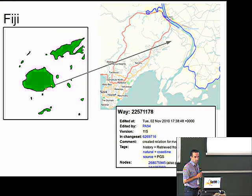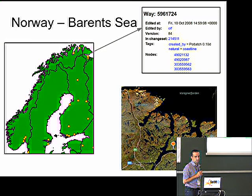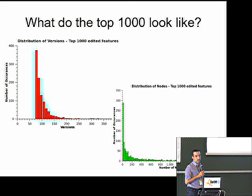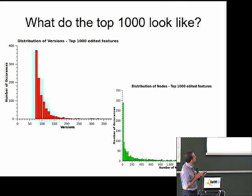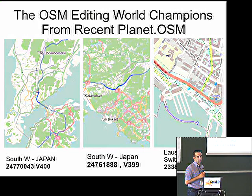In Fiji, a quite heavily edited feature turns out to be neither a polygon nor a line — it's not quite sure what it is. Up in the Bering Sea, another heavily edited feature. So what do these top 1,000 actually look like? For the most part, they don't actually have lots of nodes, and they're clustered around the 70 to 100 version mark, with some super-versioning.